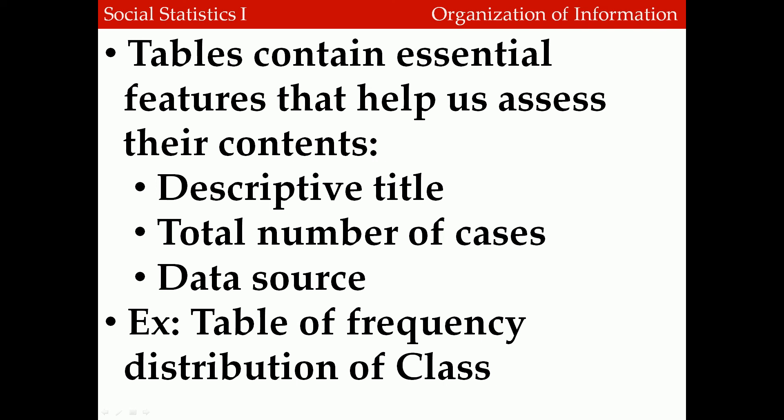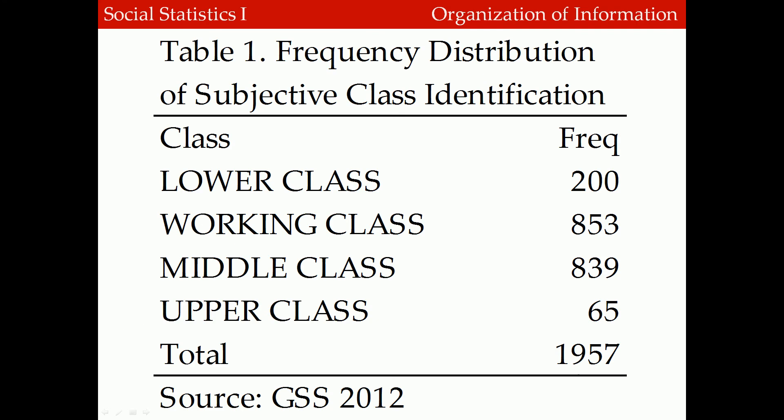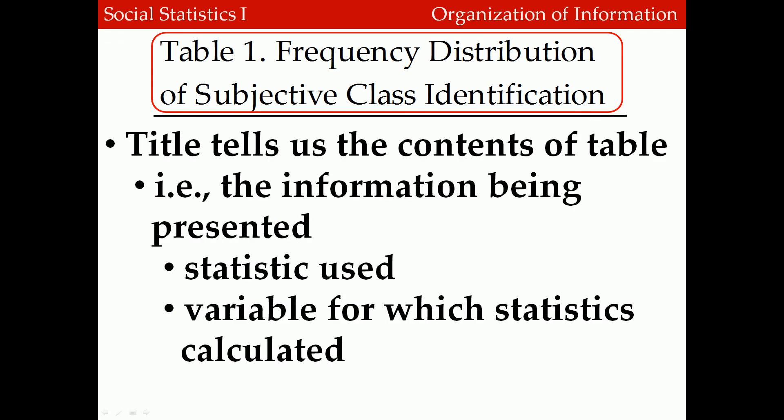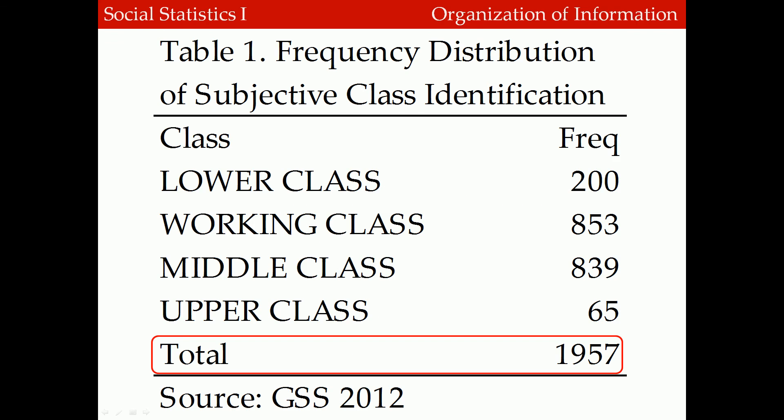Let's consider each of these using the example of a frequency distribution of class. Here's the table showing the distribution of class. Notice that it has two columns — one showing the different categories of class like lower class, working class, middle class, and upper class, and the second showing the frequency for each class. The first essential feature is the title, which tells the reader what statistic is being used — in this case the frequency distribution — and the variable being analyzed, subjective social class identification. The table also includes a total number of cases: here we see 1,957 cases.